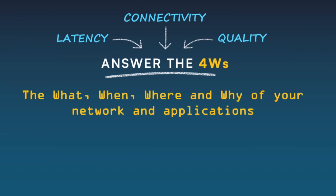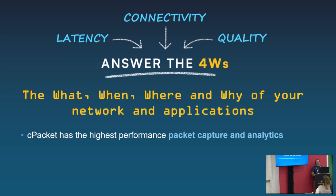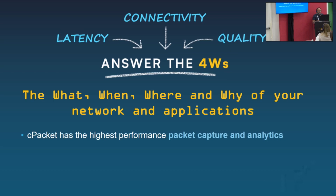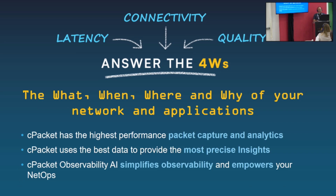To recap: the whole idea of AI here is being able to root cause an issue — one of three complaints, latency, connectivity, or quality — and understand what happened, when, where, and why in your network and applications, so you can act on it without overwhelming the network operations team. The three things to take away: cPacket has the ability to run at hundreds of gigabits per second while capturing and analyzing packets simultaneously; we use that accuracy to provide very precise, time- and location-specific insights; and we leverage AI to simplify — taking massive data and distilling it into a handful of actionable things for the day.